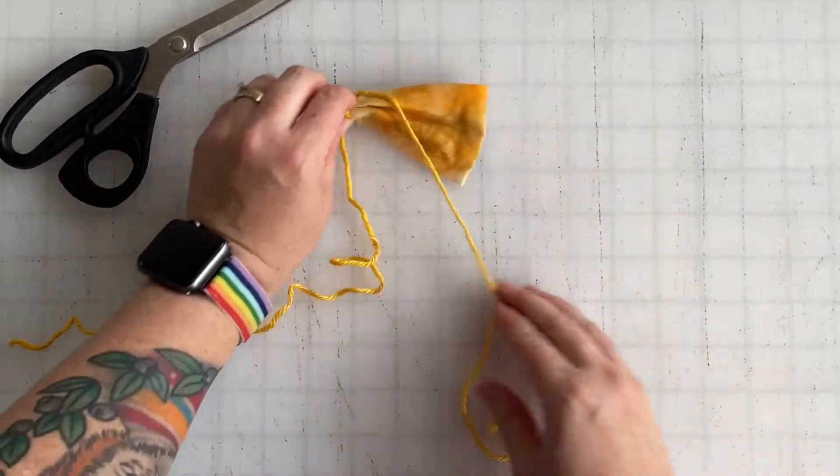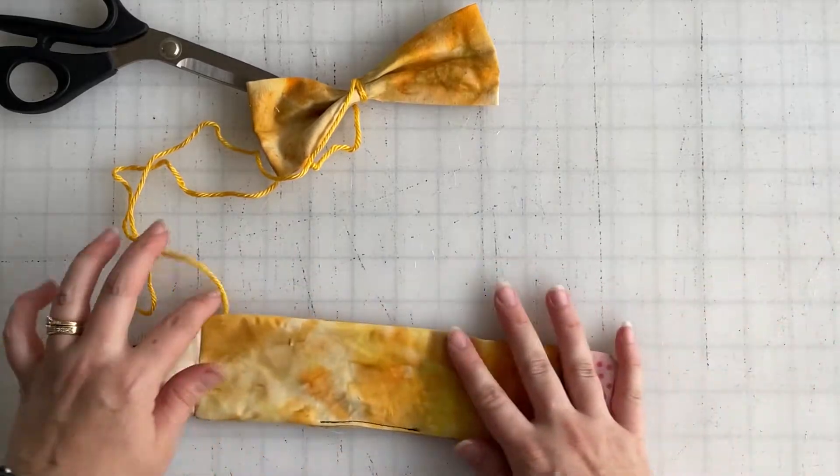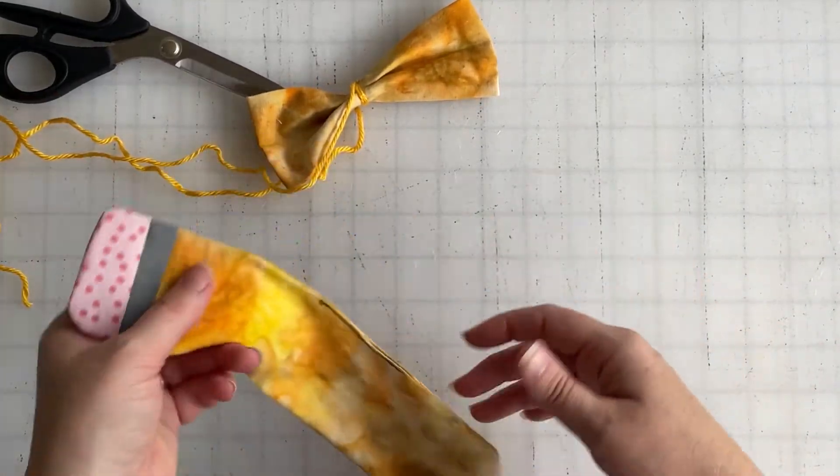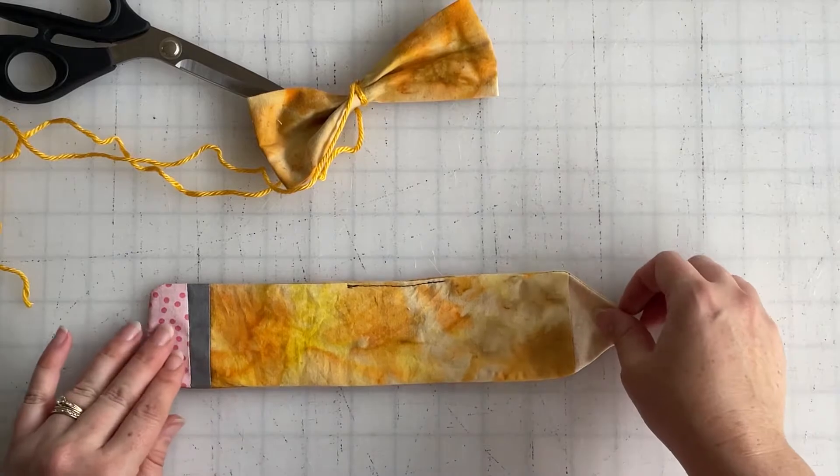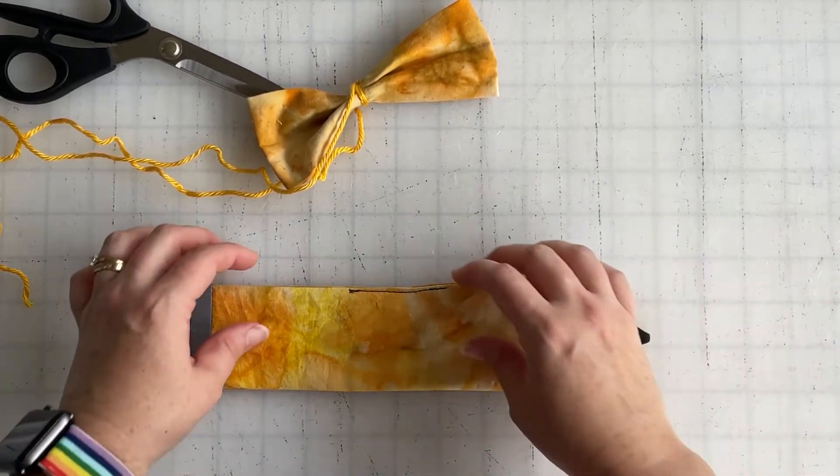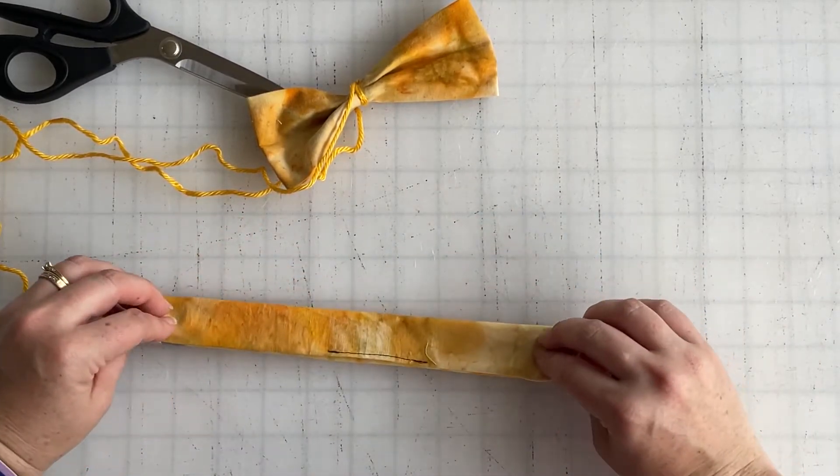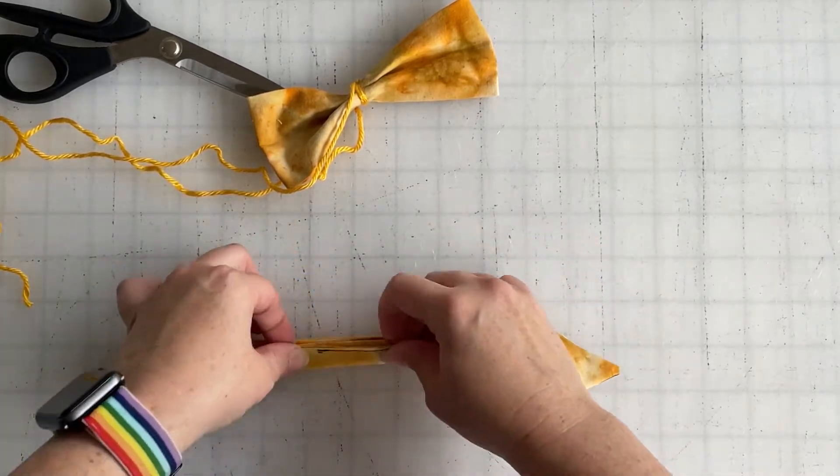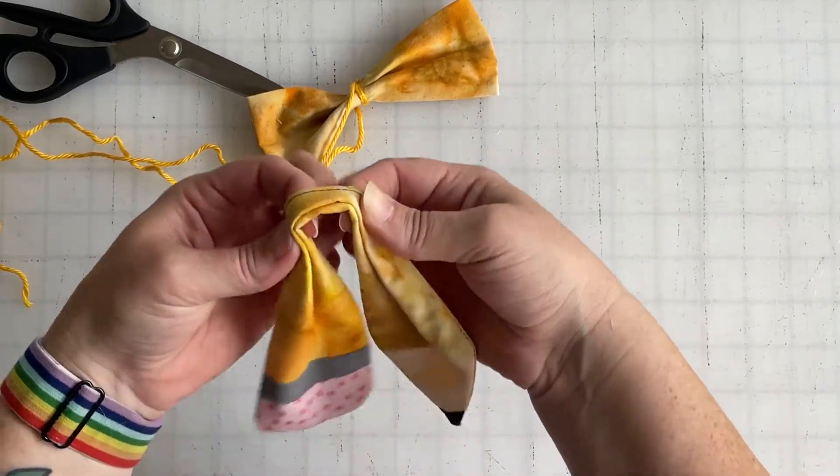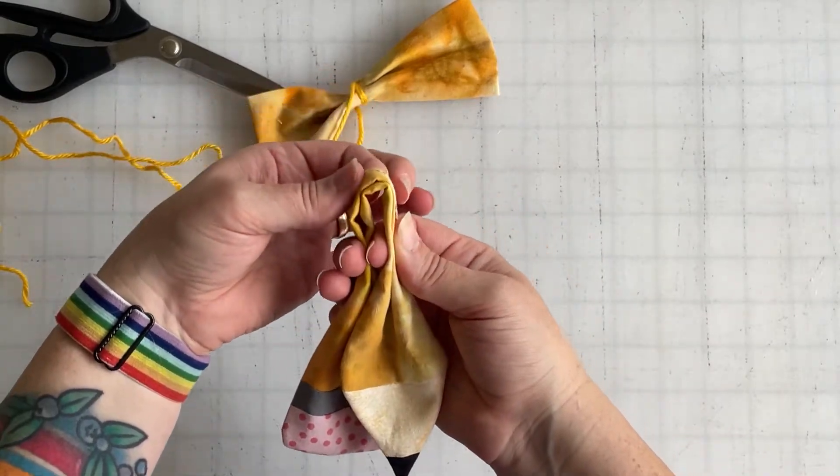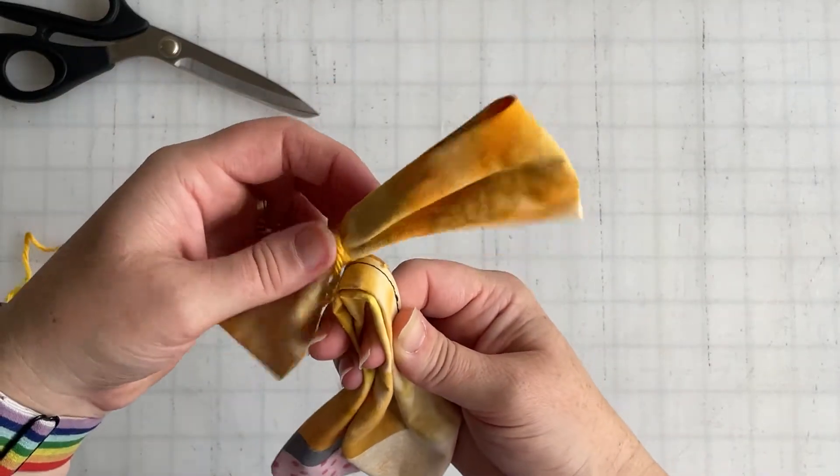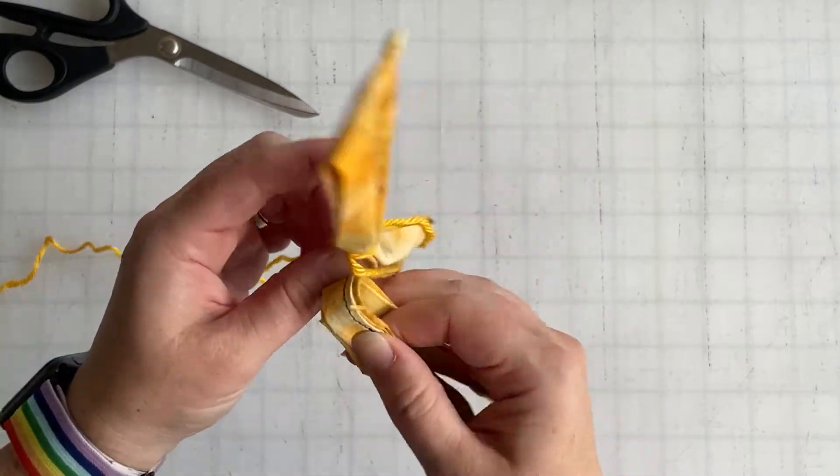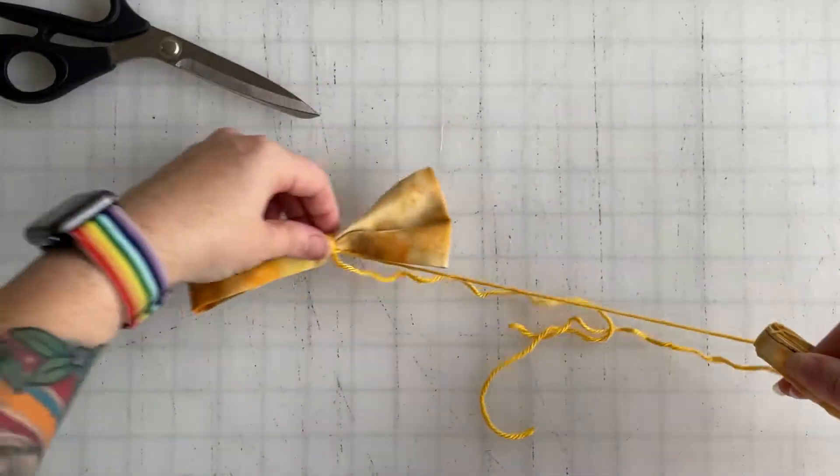Then we're going to grab our bottom bow piece and do pretty much exactly the same thing. You want to fold it in half, and then kind of fold it up meeting the top edge again, and then up meeting the top edge again. Find the middle and you want to match it to where you just knotted your other bow.